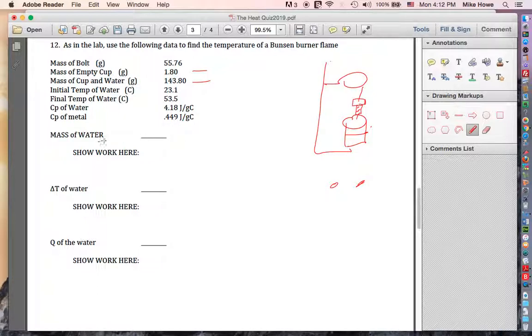So we know that the cup and water weighed this much, and then the cup by itself was that much. So if I wanted to find out what was the amount of water in the cup, I'm going to need to subtract. So that would be 0.2, 4. So it looks like 142 grams.